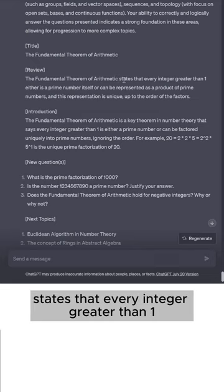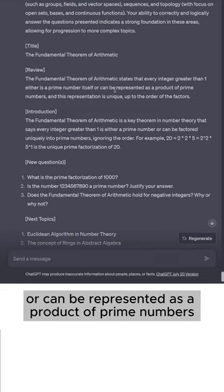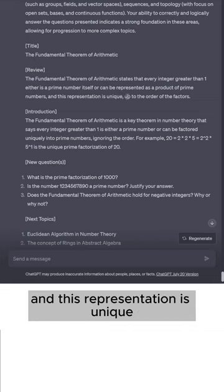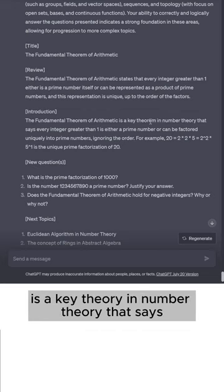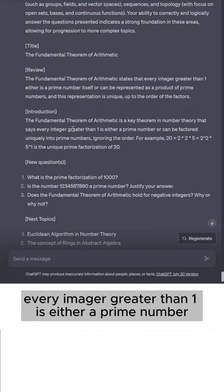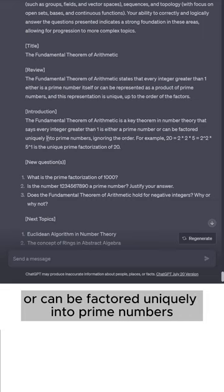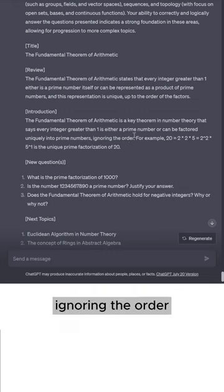The fundamental theorem of arithmetic states that every integer greater than 1 either is a prime number itself or can be represented as a product of prime numbers, and this representation is unique up to the order of the factors. The theorem says every integer greater than 1 is either a prime number or can be factored uniquely into prime numbers, ignoring the order.